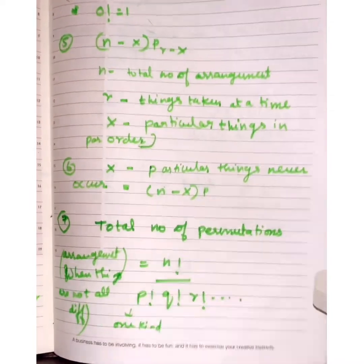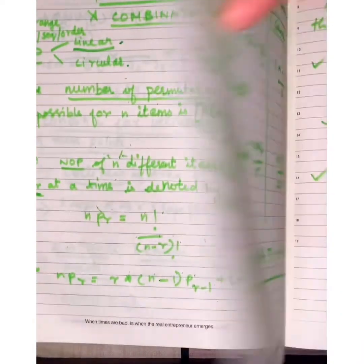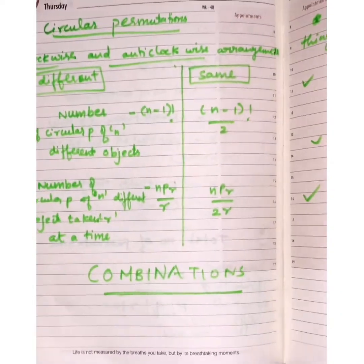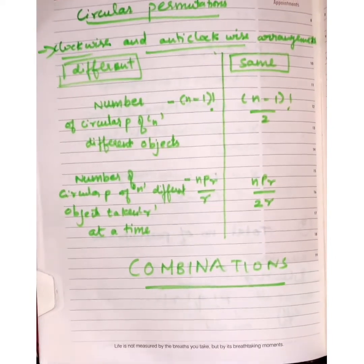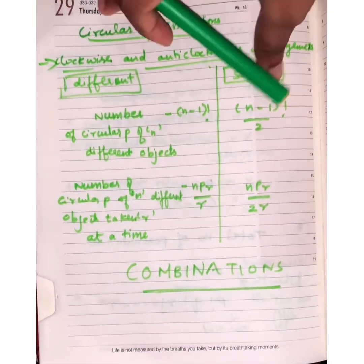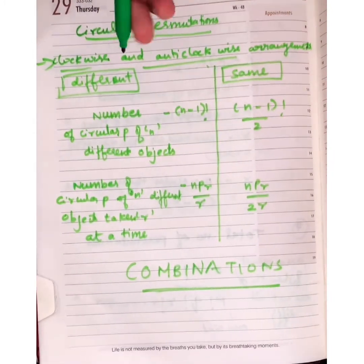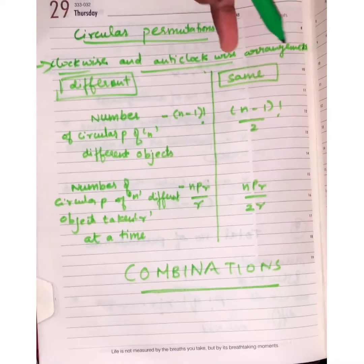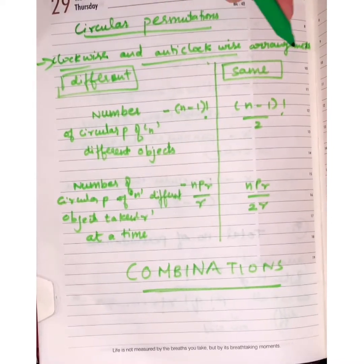Moving to circular permutations: circular permutation involves clockwise and anti-clockwise arrangements. It occurs specifically due to these clockwise and anti-clockwise arrangements.